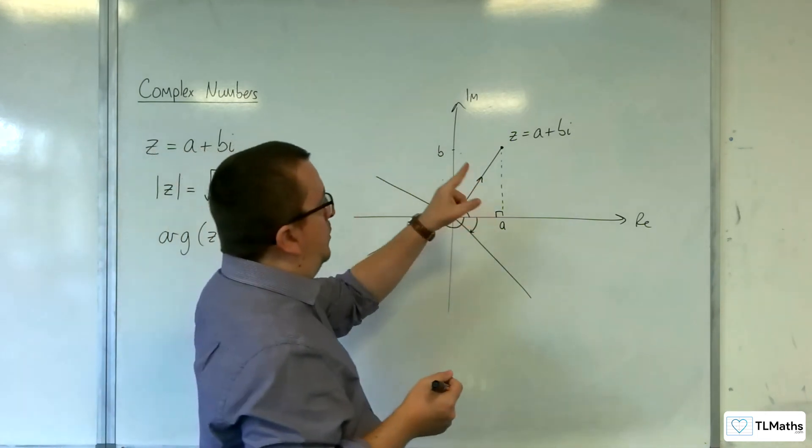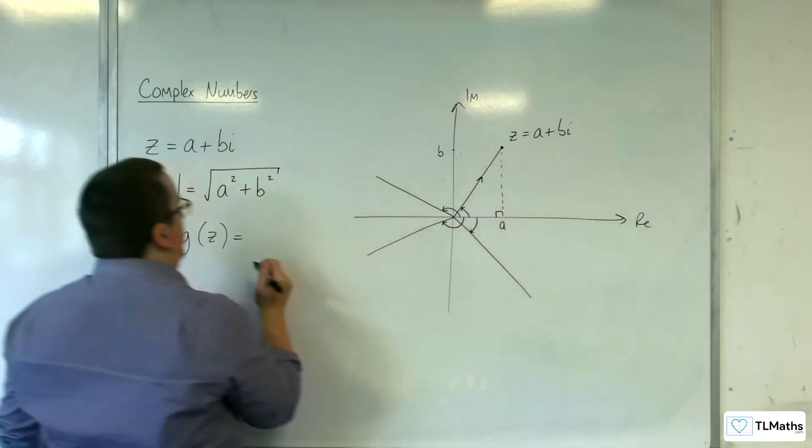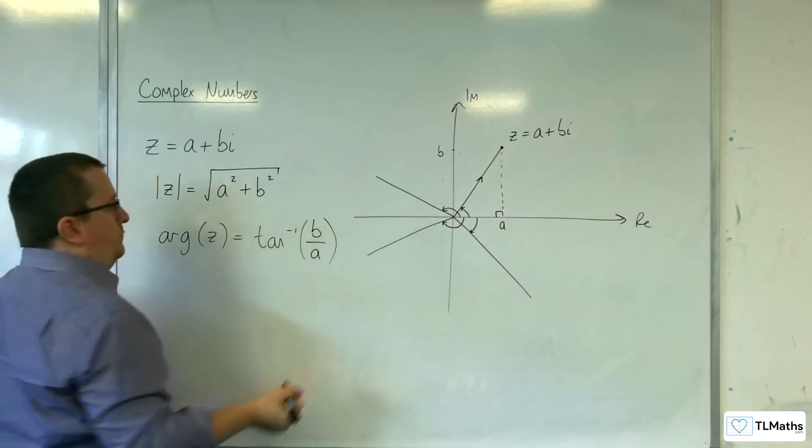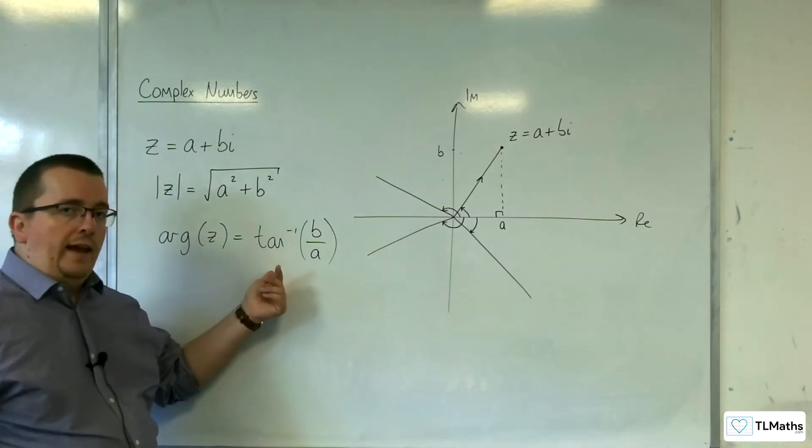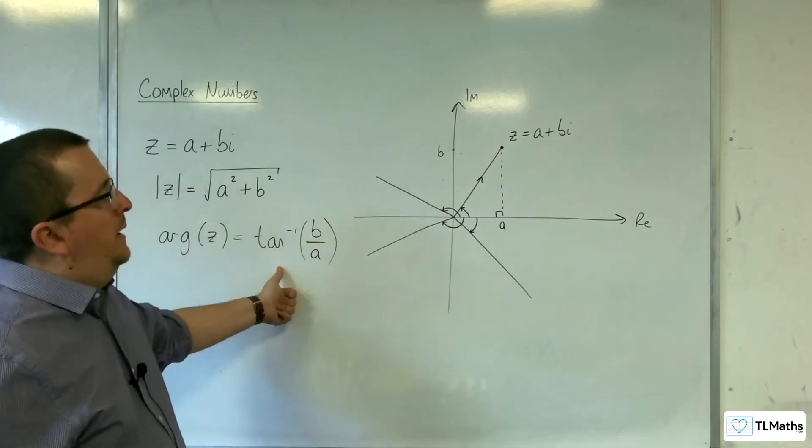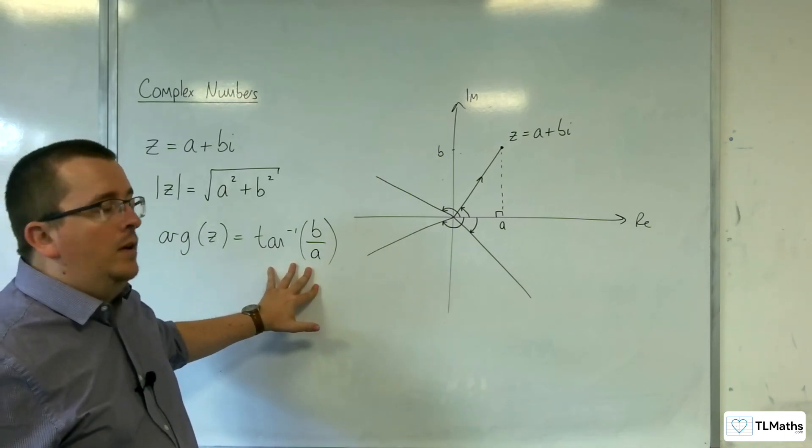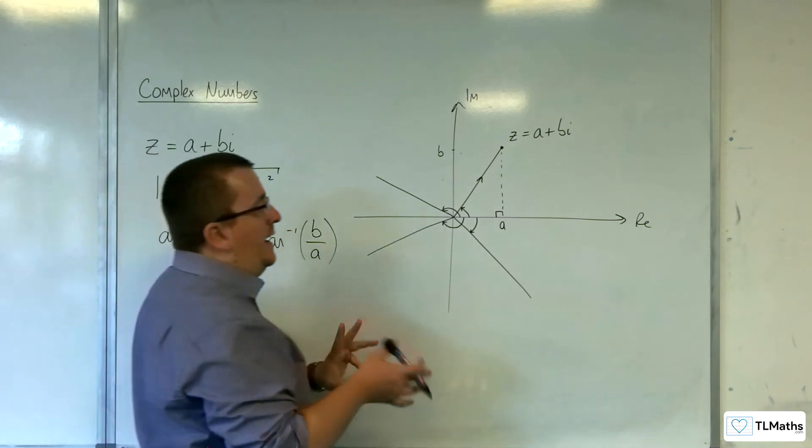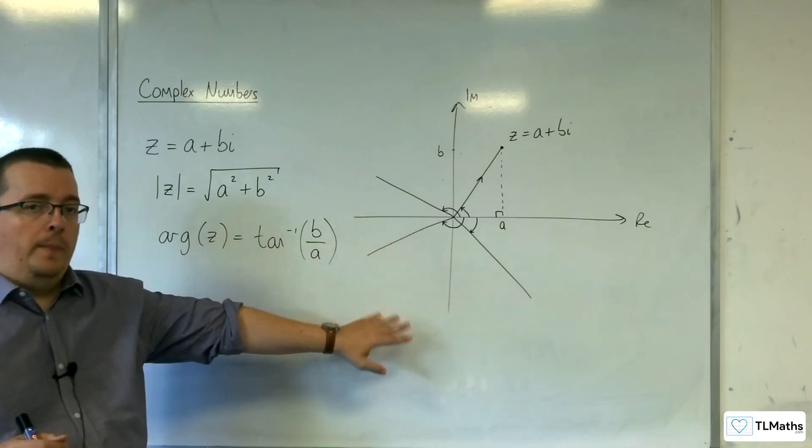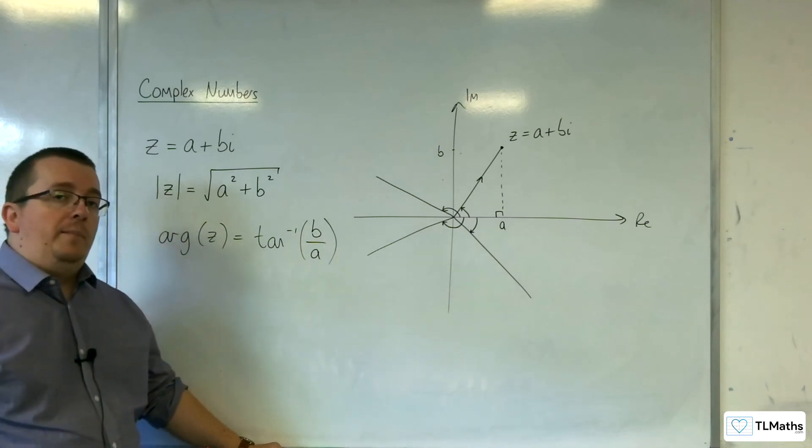The argument for our example here is going to be the inverse tan of the opposite over the adjacent, so B over A. Now, you've got to be a little bit careful with this, with remembering this just as a formula. Because you're going to hit some problems if you just think it's just B over A, the inverse tan of B over A. You're going to hit some problems with getting the correct angle. So do make sure that you draw a diagram to visualize. I'm going to show you some examples of how we can work out the modulus and argument of a complex number in the next video.